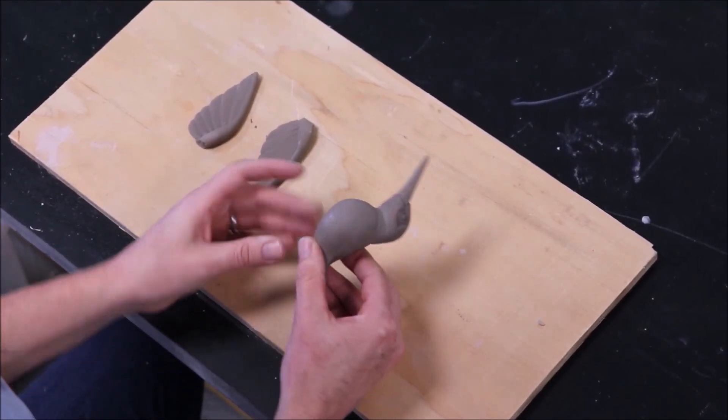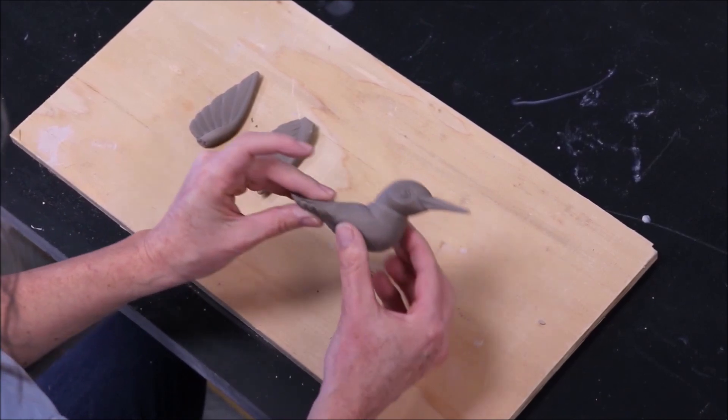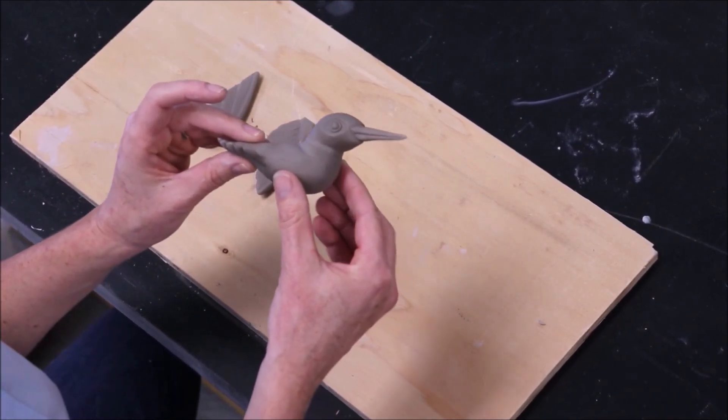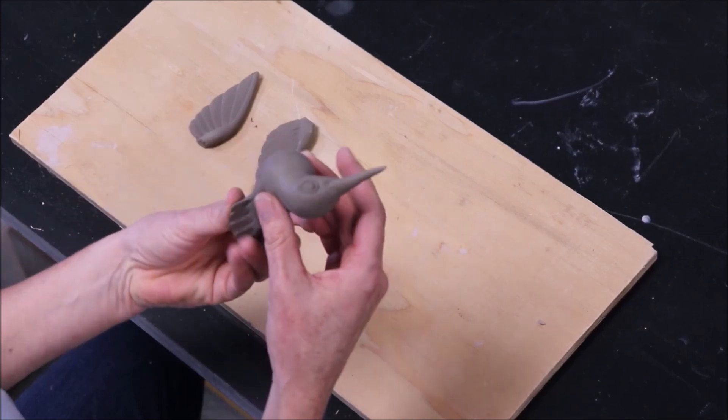This is how I make a two-piece plaster mold for slip casting. First, I have to decide where the dividing line is going to be, so where the mold will split in half.